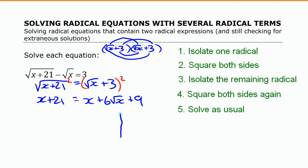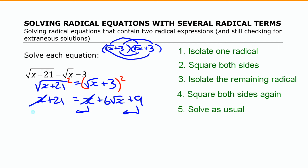Our next step is to isolate the remaining radical and then square both sides again. I'll get rid of the other terms on that side. Since there's an x on both sides, I can subtract x from both sides and they cancel out. Then moving the 9 over gives minus 9, leaving 12 on the left side. So I have 12 equals 6 root of x.